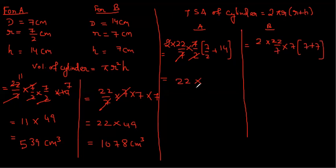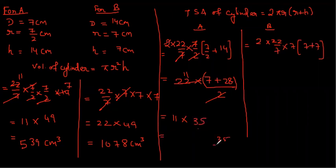LCM. 7 plus 28. 11. So 11 multiply by 35. Multiplication. 35, 35, 35, 385. Okay, 385 centimeter square is the total surface area of this.